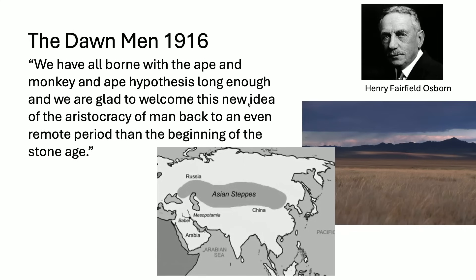In 1916, Henry Fairfield Osborne, who was at one time director of the American Museum of Natural History, wrote a book called The Dawn Man. His idea was that the ape-human split had occurred, and he suggested that in the Oligocene — about 30 million years ago — was the split between apes and humans. Human fossils probably originated not in Africa, but in the grassland steppes of Asia, and they originated alongside horses, because he studied horses.